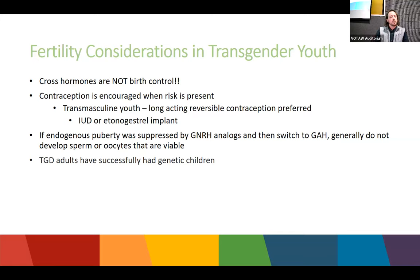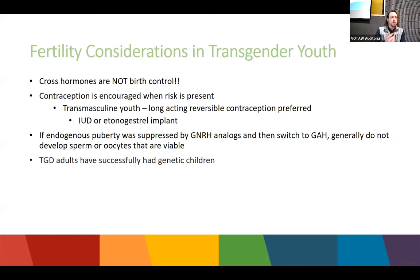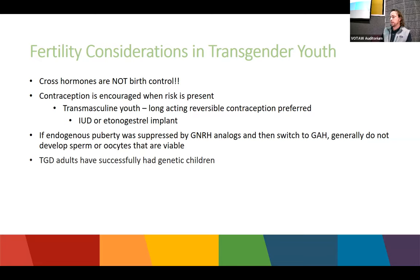Fertility considerations: cross-sex hormones are not birth control — pregnancy is still possible. For trans masculine youth who still have a sperm-producing partner, discuss pregnancy prevention beyond condoms; a progesterone-only option such as the mini-pill, a long-acting IUD, or the arm implant is preferred since progesterone-only contraception won't affect their hormones. If GnRH agonists are started early in puberty, patients are more likely not to develop viable sperm or oocytes. If they want biological children in the future, waiting before starting transition may be safer.